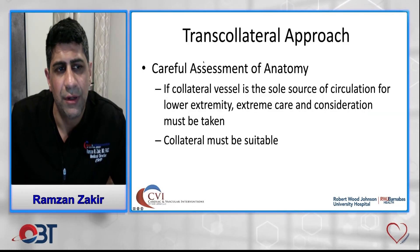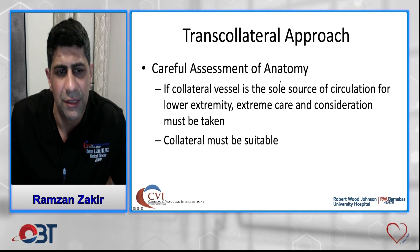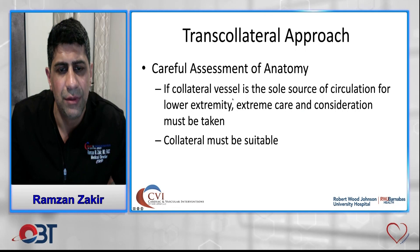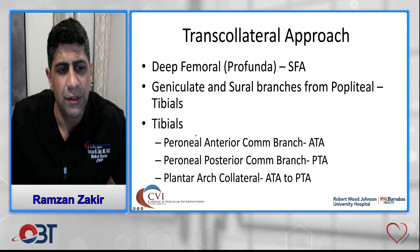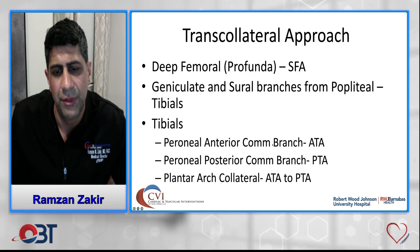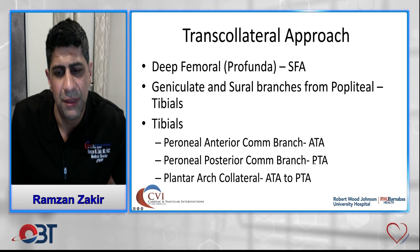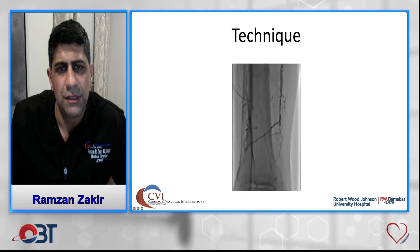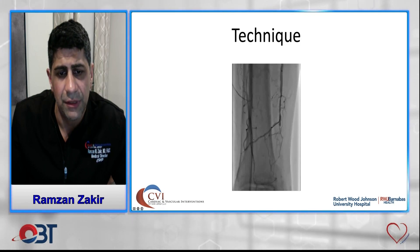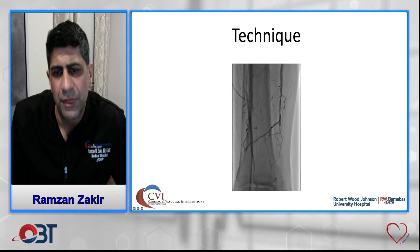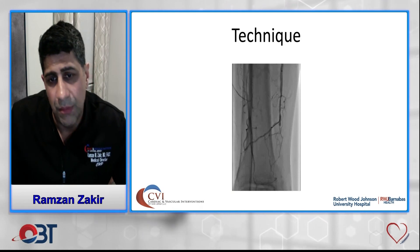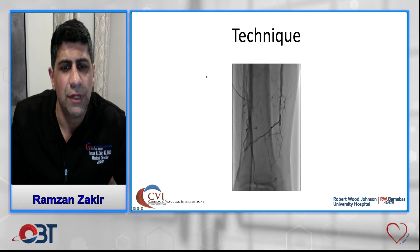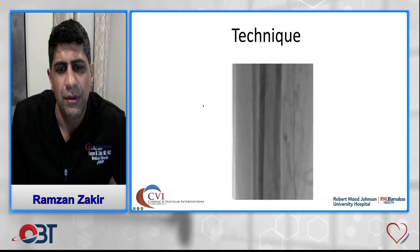For the transcollateral approach, careful assessment of collateral vessel anatomy is essential, as these may be the sole source of circulation to the lower extremity. Damaging that collateral could convert a CLI patient into an acute limb ischemia patient. For tibials, the collaterals we use include the peroneal anterior communicating branch to the AT and the posterior communicating branch to the posterior tibial artery, as well as the plantar arch. The technique involves using 0.014 support catheters and a hydrophilic wire such as the Regalia to traverse the collateral into the anterior tibial artery.